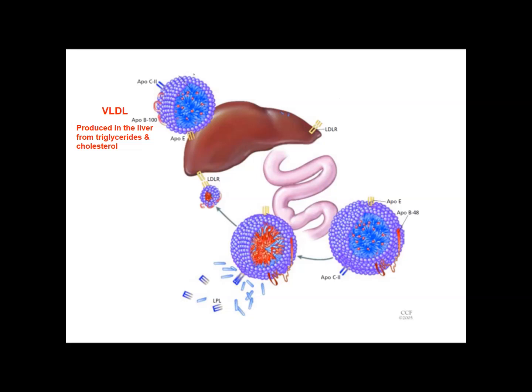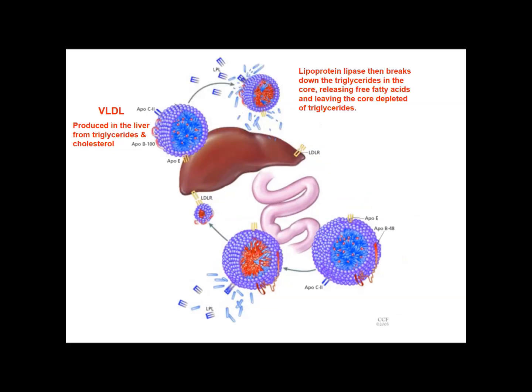But it's not the only lipoprotein, because once VLDL is in circulation it's acted on by the lipoprotein lipase enzyme, which again removes the triglycerides and breaks them down to free fatty acids, releasing them so they can be used for energy by cells. That's useful — nothing wrong with that. It leaves the core depleted of triglycerides, meaning the core is much more predominantly cholesterol once the triglycerides have been broken down and released as free fatty acids.